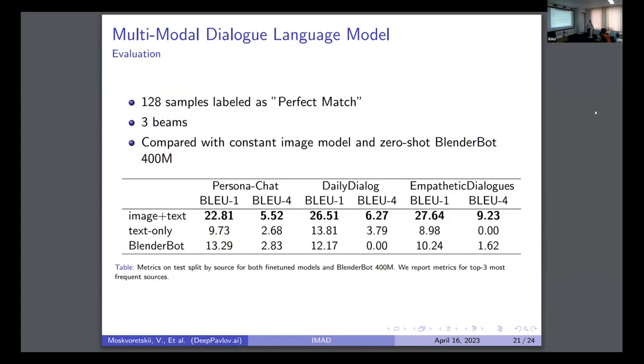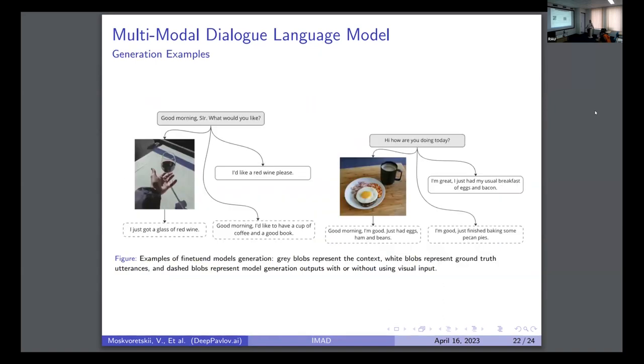And then we're evaluating on about 110 samples labeled as perfect match from assessors because we believe they are the cleanest ones. We're using three beams. Compared to other models, we outperform them on different sources of dialogues on BLEU-1 and BLEU-4. So here are some generation examples. The dashed line presents either the generated with the model with the image or no image, and no dashed line is the ground truth. There were simple clean dialogues like "Good morning sir, what would you like?" And here's a picture of a glass of red wine. The model says "I just got a glass of red wine," which is actually something like "I'd like a red wine." If the model does not know about the picture, it says something appropriate, but not in the sense of the actual phrase. Here's some phrase that is quite the same.